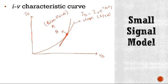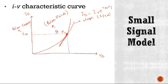This straight line is tangent at Q, where Q is the bias point. The coordinates of this bias point give us the values of the unknown quantities — diode current and diode voltage. Drawing a line from this point to the y-axis gives us ID, which is the bias current. Drawing a line from this point to the x-axis gives us VD, which is the bias voltage.